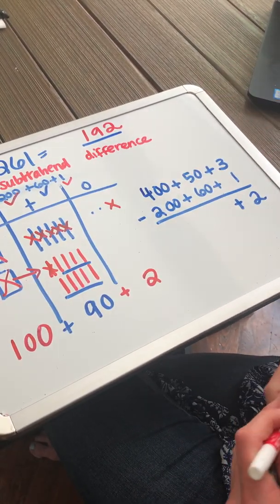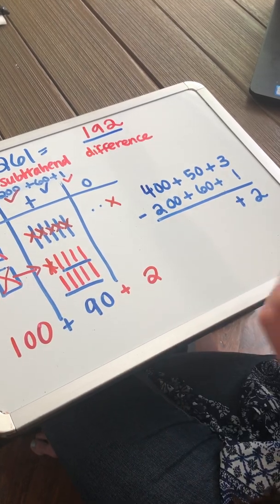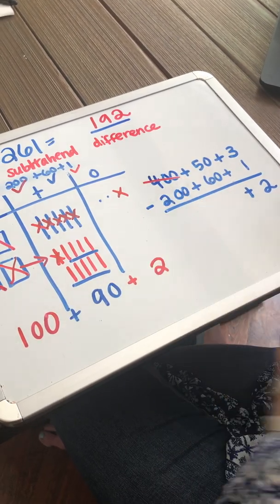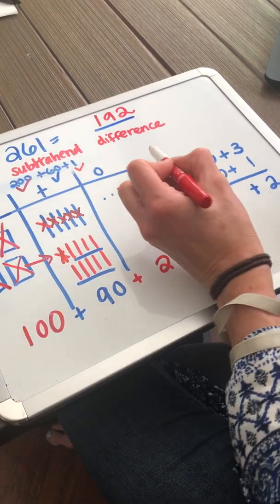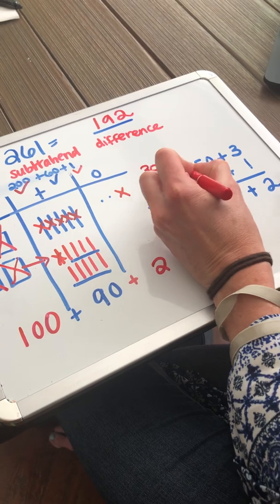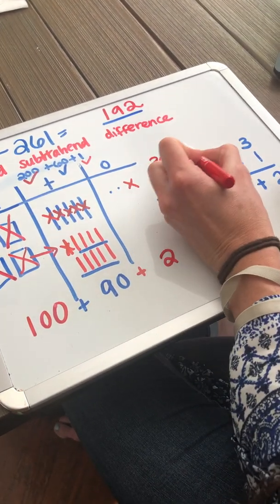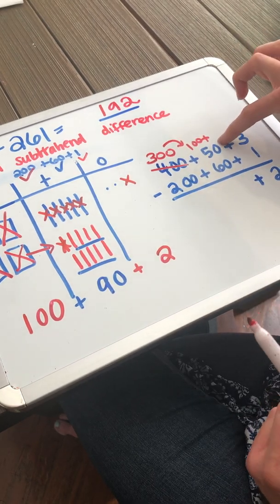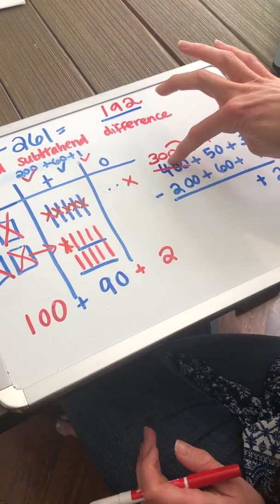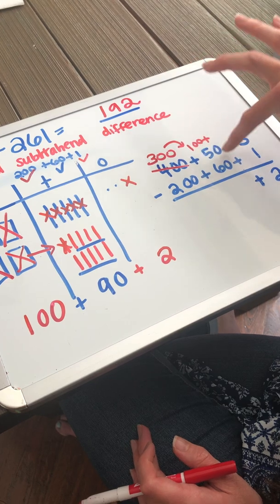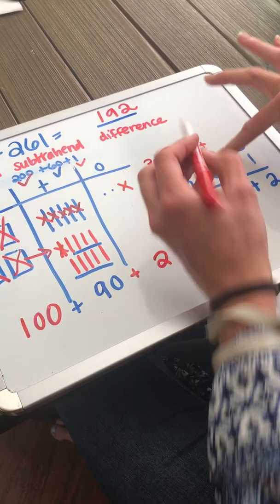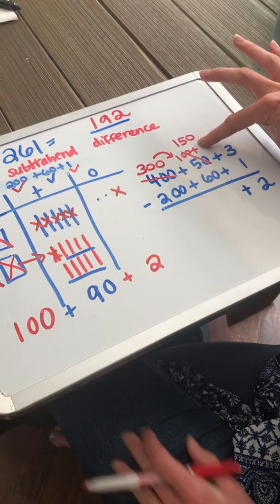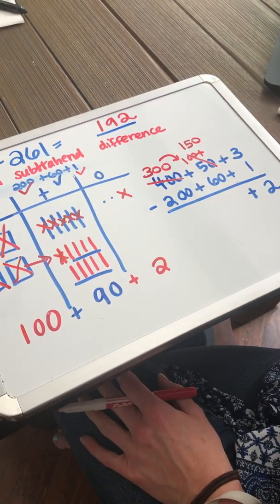But 50 minus 60, that's not going to work. I can't take away 60 if I only have 50. So I am going to have to come to my hundreds and I'm going to have to take away a hundred. I'm going to have to go down to 300 and I am going to have to pass over a hundred to the 50 that was already there. So I'm taking a hundred away and I'm passing a hundred to the 50 that is there. Well, I know that 100 plus 50 is actually 150.